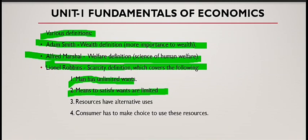Second point: means to satisfy wants are limited. The multiplicity of wants alone will not create an economic problem if man has unlimited resources to satisfy them — but that is not so. Resources are scarce in relation to demand. A mere shortage of supply does not make a commodity scarce if there is no demand for it. On the other hand, there may be huge stocks of a commodity like wheat or coal, yet it is considered scarce because demand is even greater than supply.